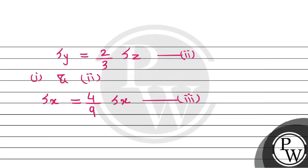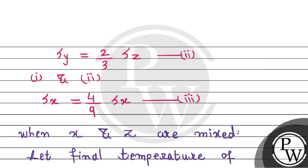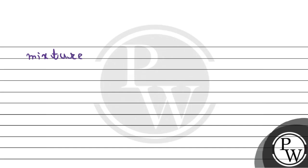So when liquid X and Z are mixed, when X and Z are mixed, at that time also heat lost or heat gained will be same. So for that we assume let final temperature of mixture is capital T degree Celsius. So by using the same equation, we have mass into S of X, final temperature T minus initial temperature of X, 10 degree Celsius. This will be equals to mass into S of Z into 30 minus T.